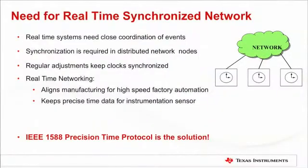You might be wondering what these features mean for your end application. The biggest niche these devices can now service, which previous Stellaris Ethernet devices could not, is for applications that require high-precision synchronization. These are typically systems that require very tightly controlled clock coordination of events — distributed network nodes that require regular adjustments to disjoint clock domains in order to remain synchronized. The precision required is often in the sub-millisecond range, all the way to sub-1 microsecond. Examples include automation systems for high-speed manufacturing processes requiring precise assembly line controls, or systems requiring precise time data of instrumentation for sensors. Conformity to IEEE 1588 is the underlying hardware enabler allowing TM4C129X devices to provide a compelling, cost-effective solution for such applications.